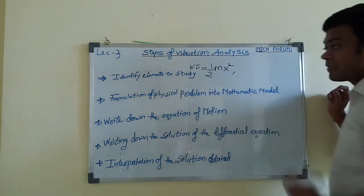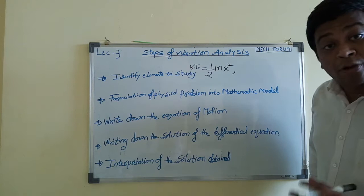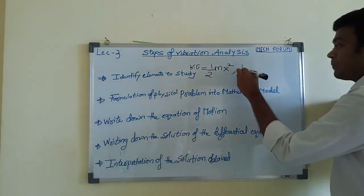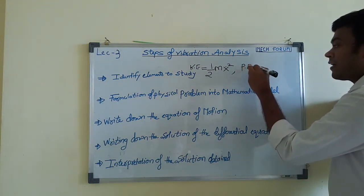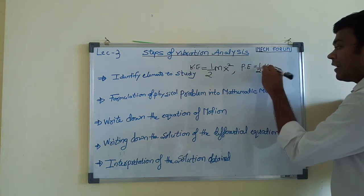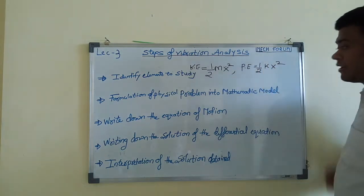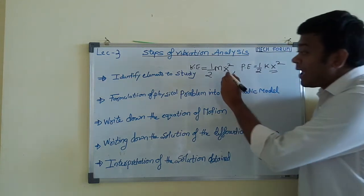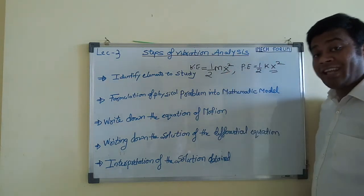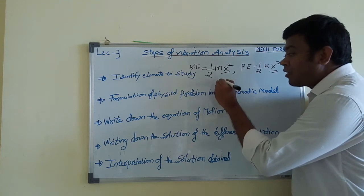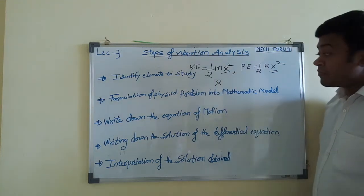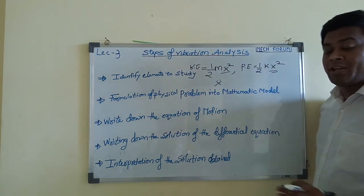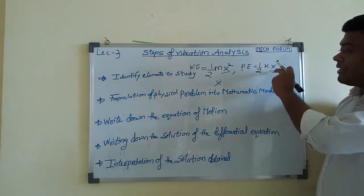Second, your spring will possess potential energy. The potential energy of the spring is half k x square. Here x indicates your displacement, x dot indicates your velocity, and x double dot indicates the acceleration.